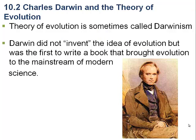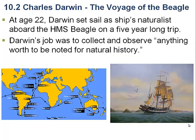We want to talk briefly about Charles Darwin. The theory of evolution is sometimes called Darwinism simply because of his role in introducing this idea — very specifically, the idea that evolution occurs via natural selection. He made observations regarding natural selection and hypothesized that, given sufficient periods of time, one organism could give rise to a diversity of organisms. Darwin didn't invent this idea, but he was the first person to put these ideas down in writing in the form of a book that was widely read and widely cited.